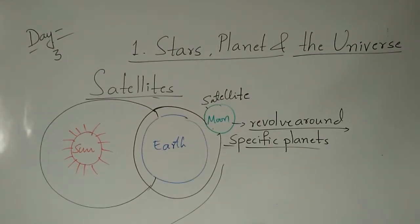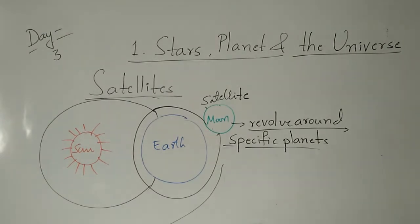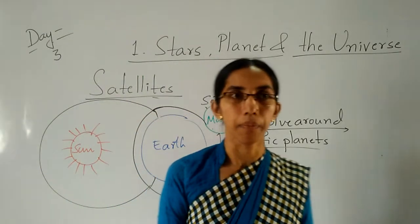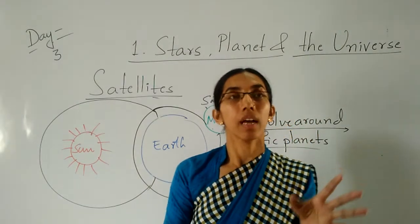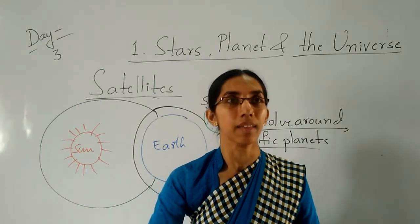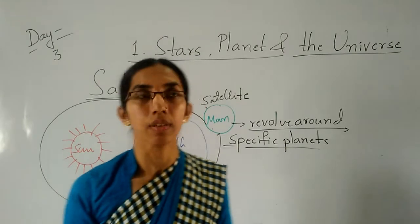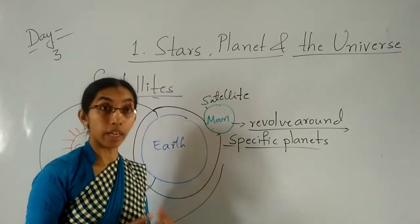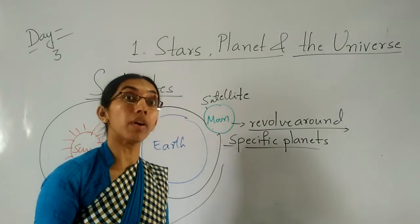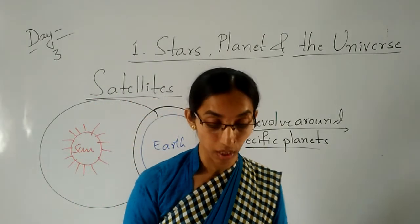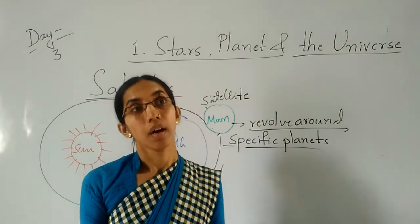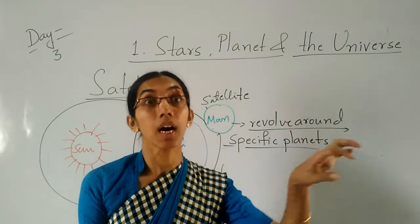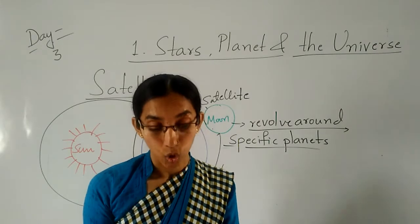Next we will see other heavenly bodies in the solar system. We discussed eight planets and the dwarf planet Pluto, and we discussed satellites. Other heavenly bodies in the solar system include: asteroids, comets, and meteors. These are all called other heavenly bodies in the solar system.